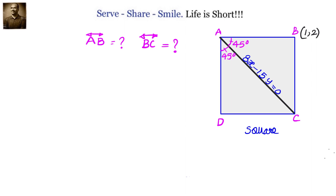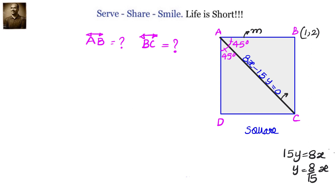Given 8x minus 15y equals 0, we get 15y equals 8x, or y equals 8x by 15. So the slope of AC is 8 by 15. Let us say the slope of AB is M. Once we know the slope of AB and AC, we can use the formula to calculate M. Since the angle between them is 45 degrees, slope of AB is M and slope of AC is 8 by 15.